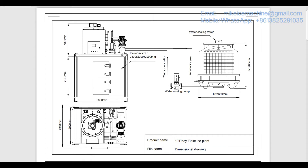This is the compressor. This is the water cooling condenser. This is the water cooling tower. This is the water cooling pump — the pump maintains the water circulation between the condenser and the cooling tower. Water goes into the condenser from this line and comes out from this line. Heat is carried from the ice machine to the tower and released into the ambient.